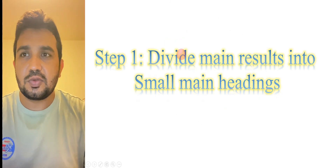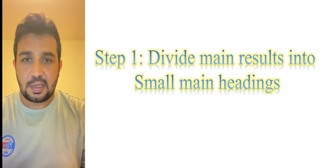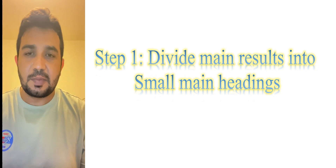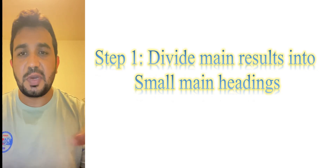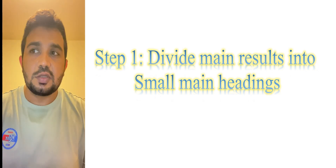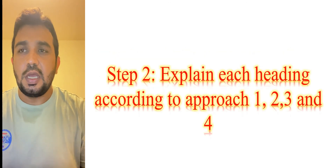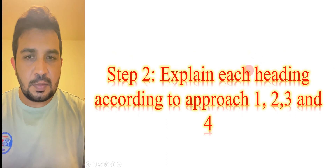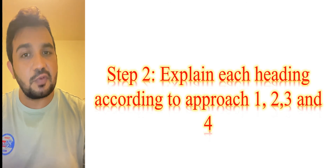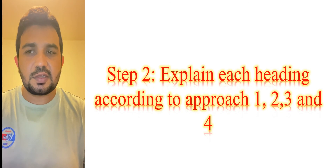If you want to write your discussion, divide all your main results into small main headings. For example, if your results section has six parts with two parts explaining one idea each, you can make three smaller headings in the discussion section and apply approaches one, two, three, and four to each heading. In this way you can write your discussion easily.